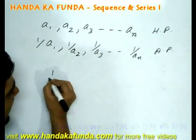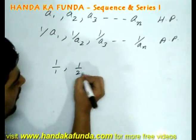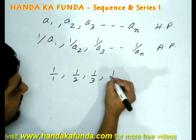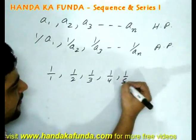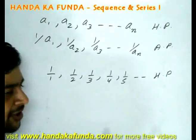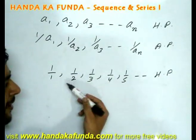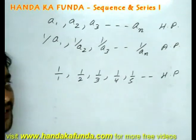What I mean is something like 1 by 1, 1 by 2, 1 by 3, 1 by 4, 1 by 5. These are terms of a harmonic progression because their reciprocals, that is 1, 2, 3, 4, 5, they are in an AP.